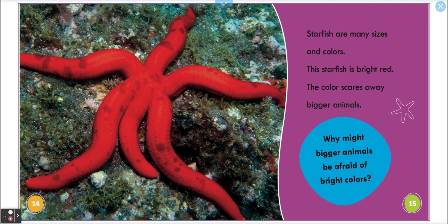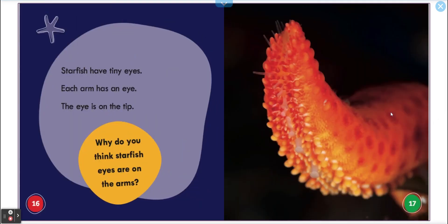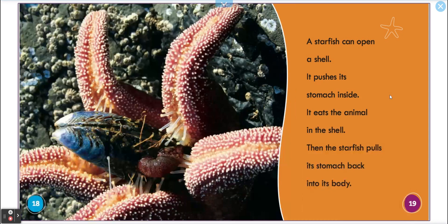Why do you think starfish have tiny eyes? Each arm has an eye — the eye is on the tip here. Starfish eyes are on the arms to watch, to see the floor, to see the predators.